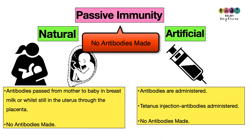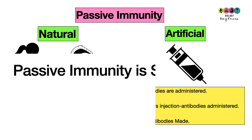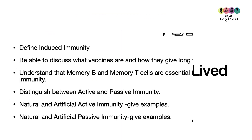Passive immunity can also be natural or artificial. In passive immunity, no antibodies are made — they're introduced, having been made by another organism. Natural passive immunity occurs when antibodies pass from mother to baby in breast milk or through the placenta. Artificially, this can happen when antibodies are administered, for example in a tetanus injection. Passive immunity is short-lived.